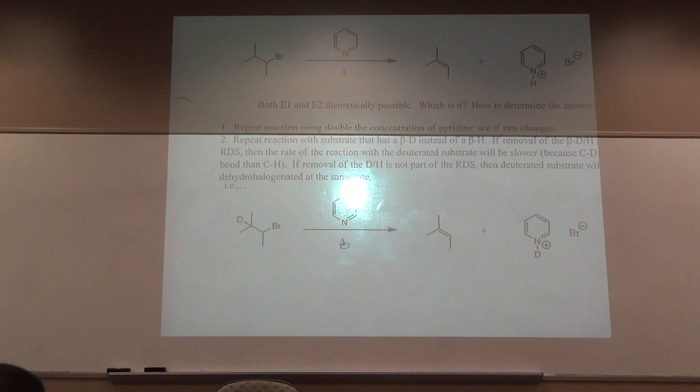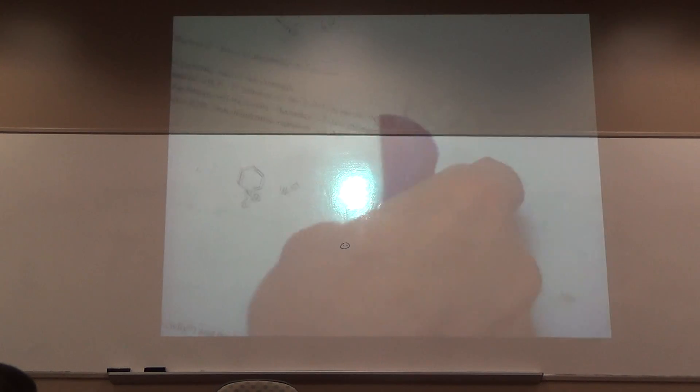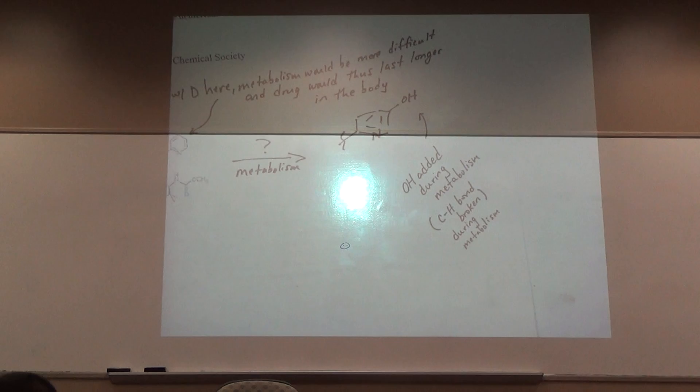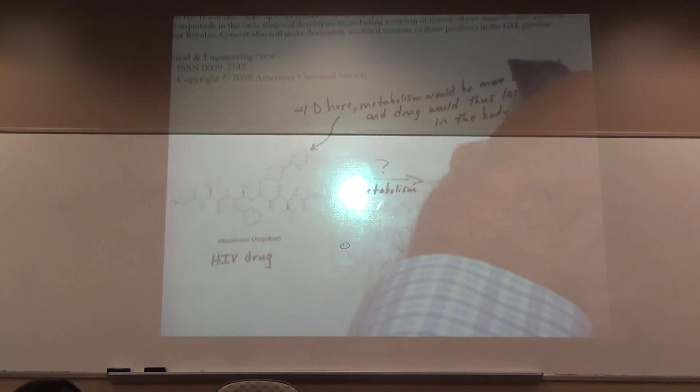Which mechanism is the carbon deuterium bond broken in the rate determining step? E2. Or carbon hydrogen, whichever one. H or D, same thing. Some cases it is, some cases it isn't.